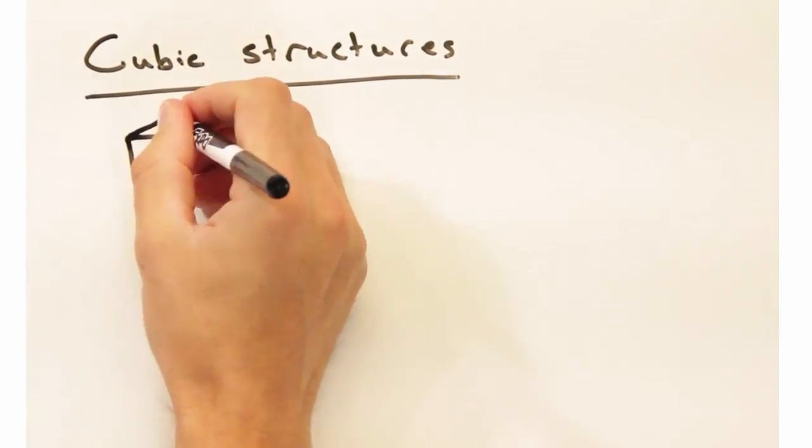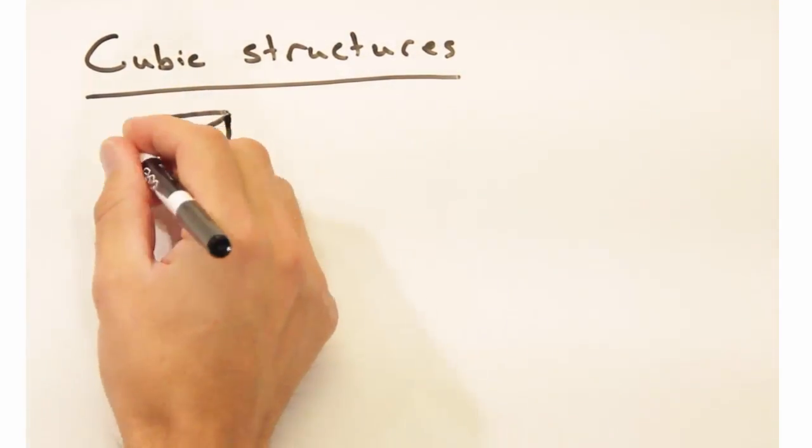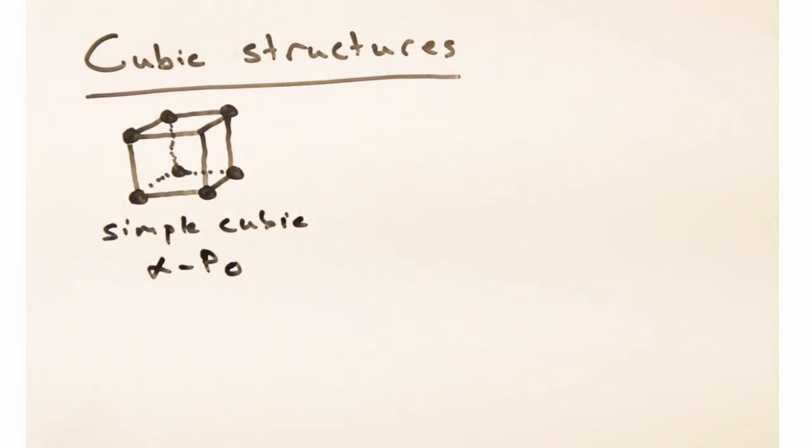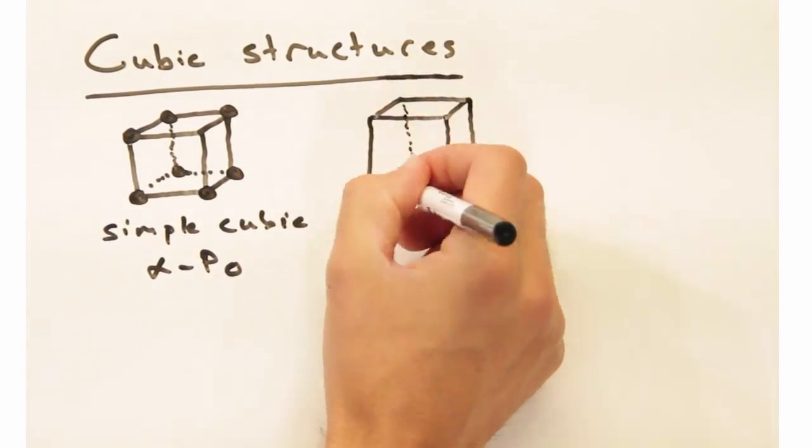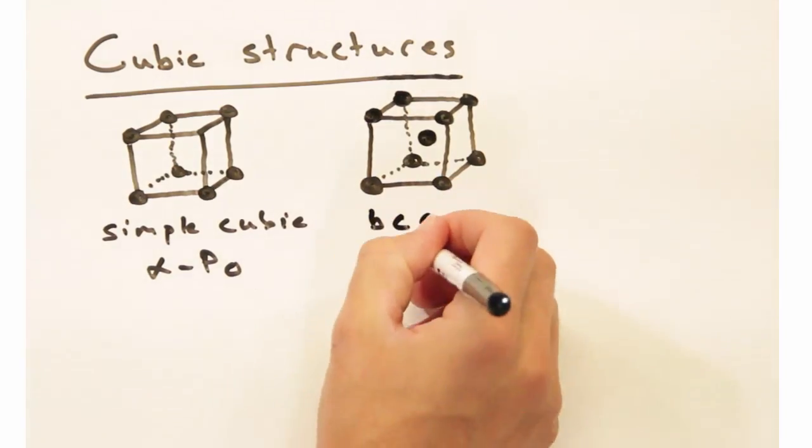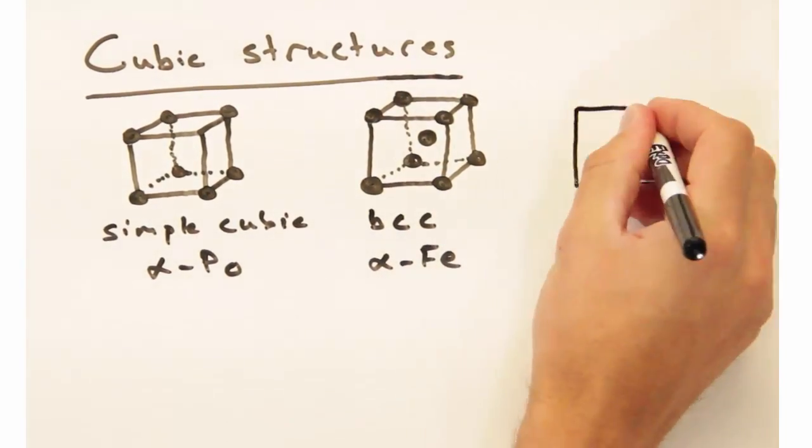Nicole, why don't you start us off with some cubic structures? Sure. First we have alpha polonium, which is simple cubic. Then we have alpha iron in the body-centered cubic structure, and finally copper in the face-centered cubic structure.